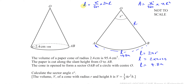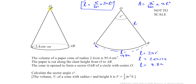This arc length formula will be easier to use since we know L = 4.8π. What remains is finding R, the radius of the sector. The radius of the sector equals the slant height of the cone, because when you open the cone up, that edge becomes the radius of the sector.